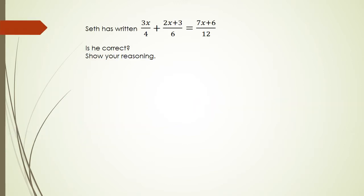So obviously, this is one of the styles of questions they're looking at this year. Seth has written 3x over 4 plus 2x plus 3 over 6 equals 7x plus 6 over 12. Is he correct? Show your reasoning. Okay, so what we're going to do is I'm just going to work with the left hand side of this equation. So I've got 3x over 4 plus 2x plus 3 over 6.